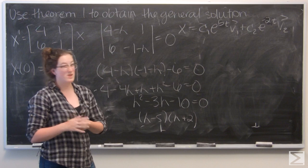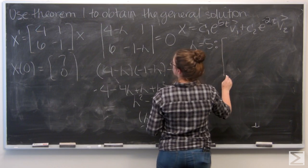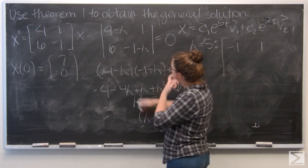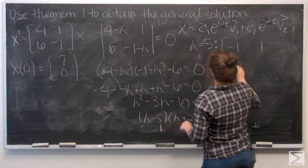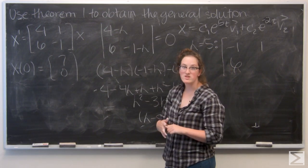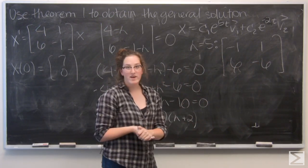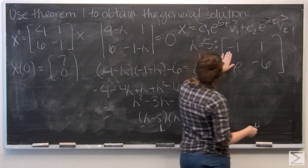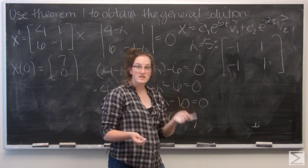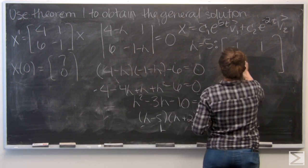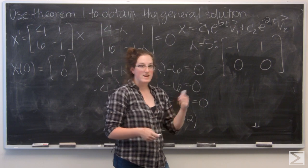Let's start by finding the eigenvector for lambda equals 5. So for the first row I have 4 minus 5 which is negative 1 and 1. Then I have 6 and negative 1 minus 5 which is negative 6. I'm going to reduce the second row by a factor of negative 6 to get negative 1, 1 which matches the top row. So I'm just going to subtract the first row from the second. And I will get a row of zeroes and then I want to multiply the top row by negative 1 so that I can have a leading one.